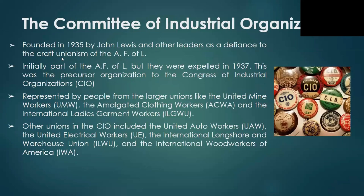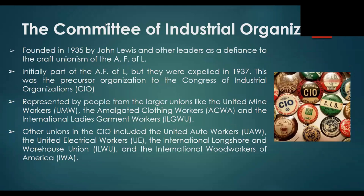The Committee of Industrial Organizations was founded in 1935 by John Lewis and other leaders in defiance of the craft unionism of the AFL. Initially part of the AFL, they were expelled in 1937. This was the precursor organization to the Congress of Industrial Organizations, the CIO, represented by people from larger unions like the United Mine Workers (UMW), Amalgamated Clothing Workers (ACWA), International Ladies' Garment Workers (ILGWU), Steel Workers Organizing Commission, United Auto Workers (UAW), United Electrical Workers (UE), International Longshore and Warehouse Union (ILWU), and International Woodworkers of America.